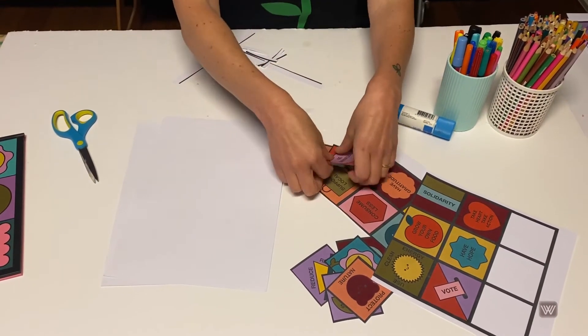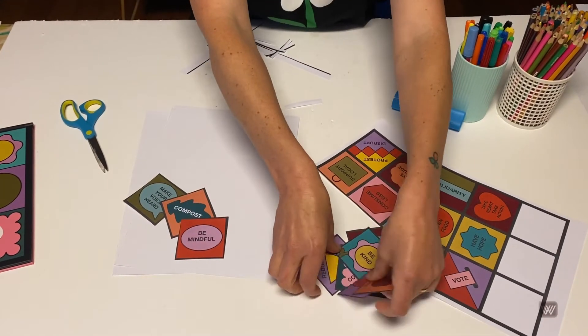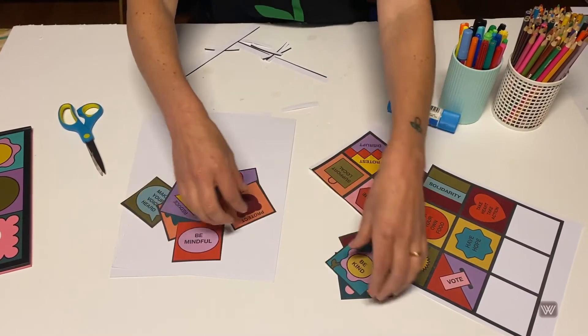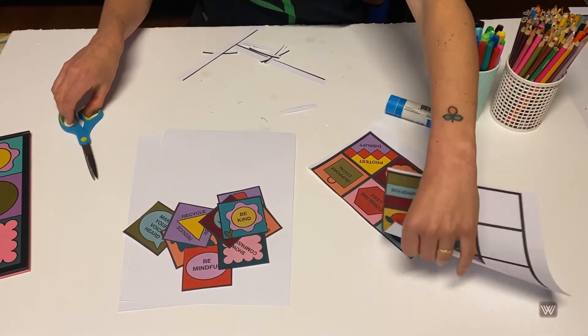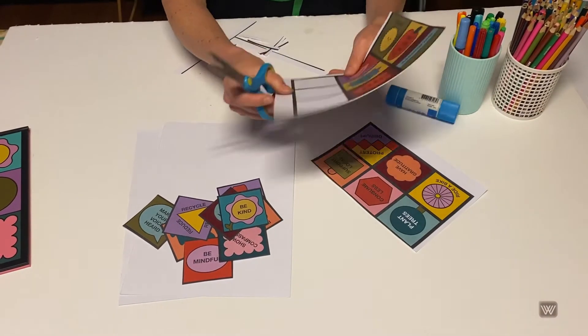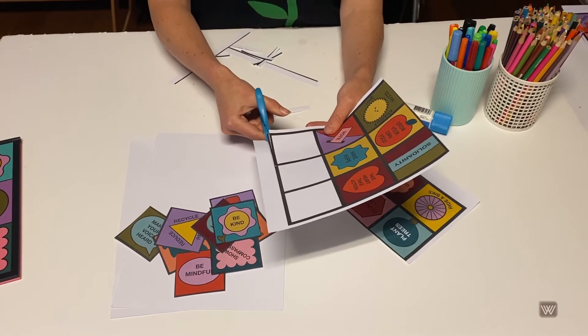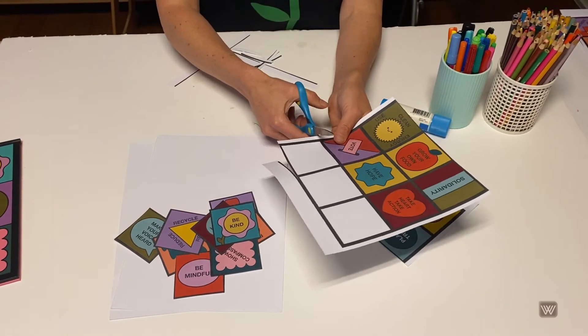How many have I got? 1, 2, 3, 4, 5, 6, 7, so I need another three to fill it up. Or you could just do that many if you like. How about we do that many and then I'm going to make one of my own as well.